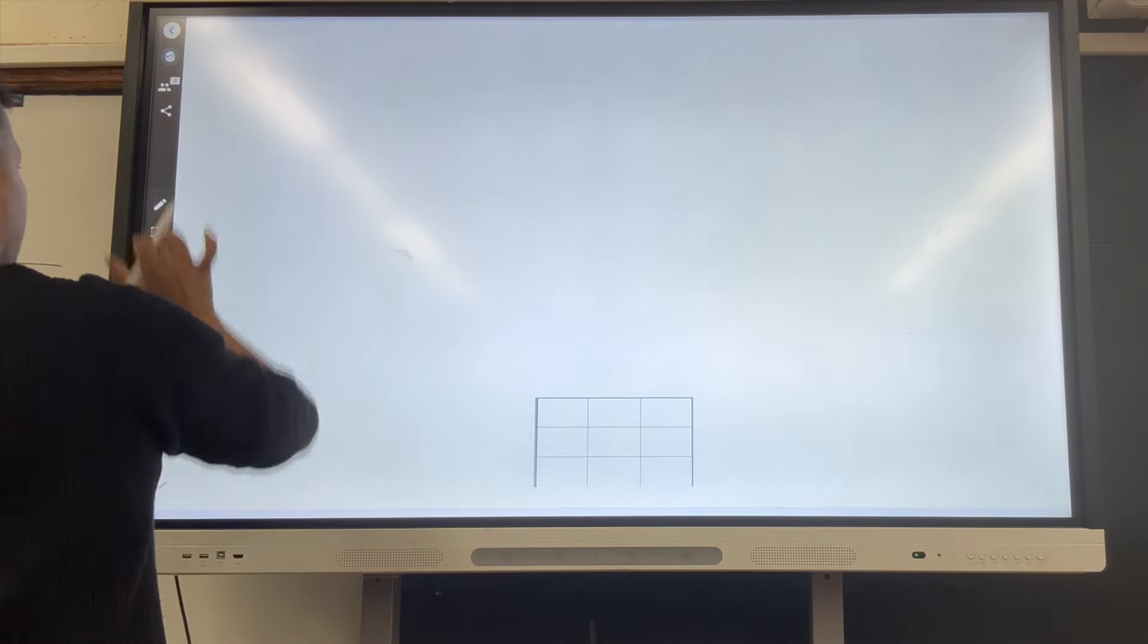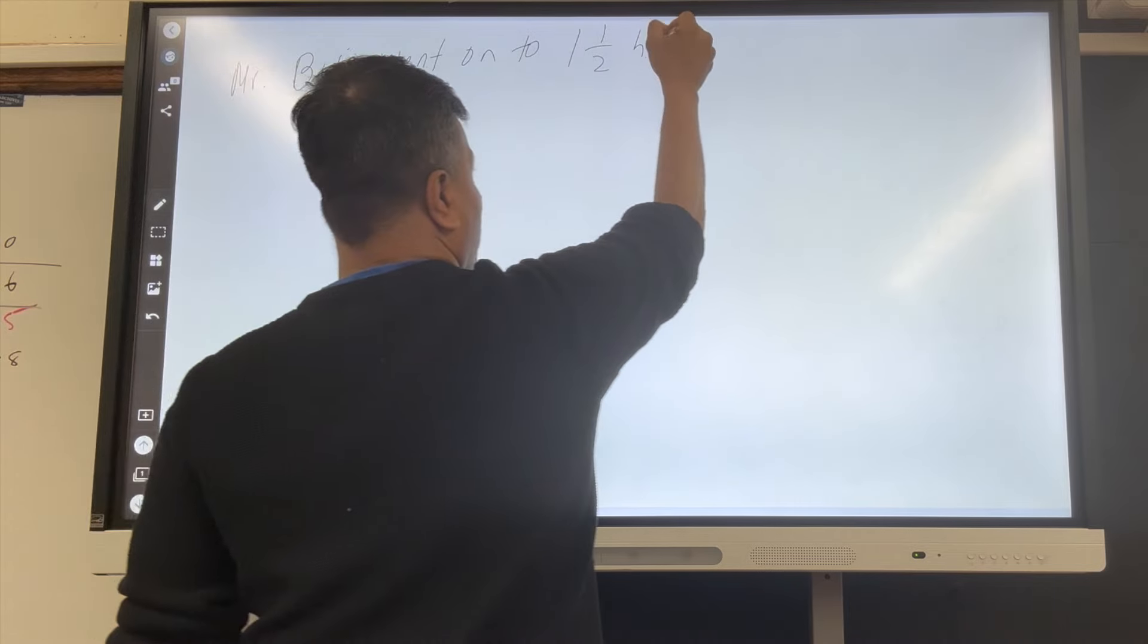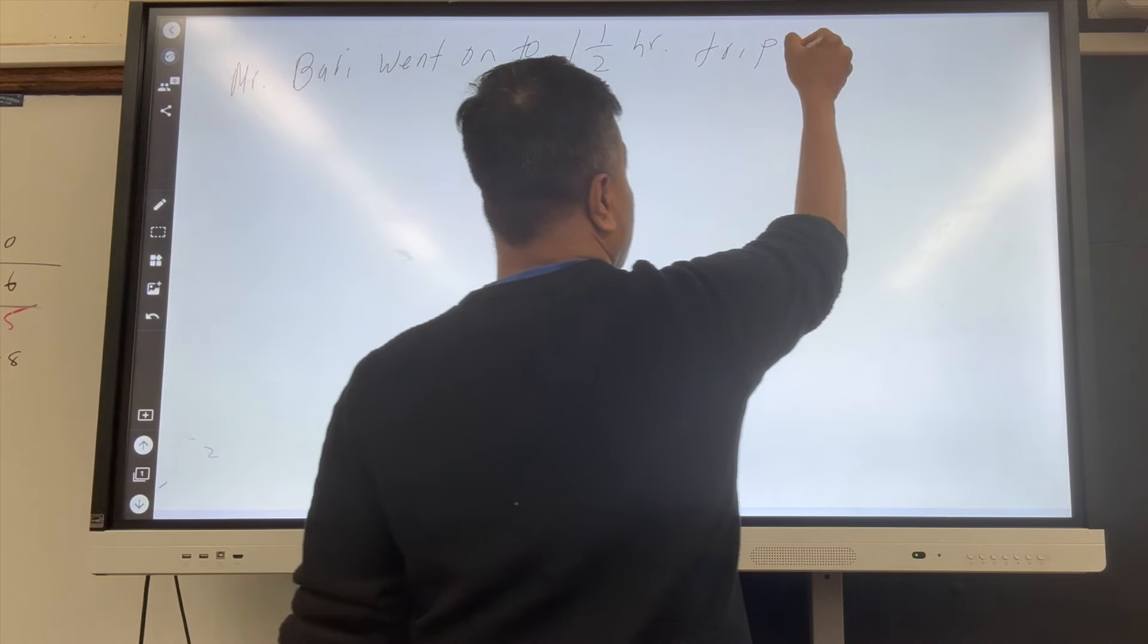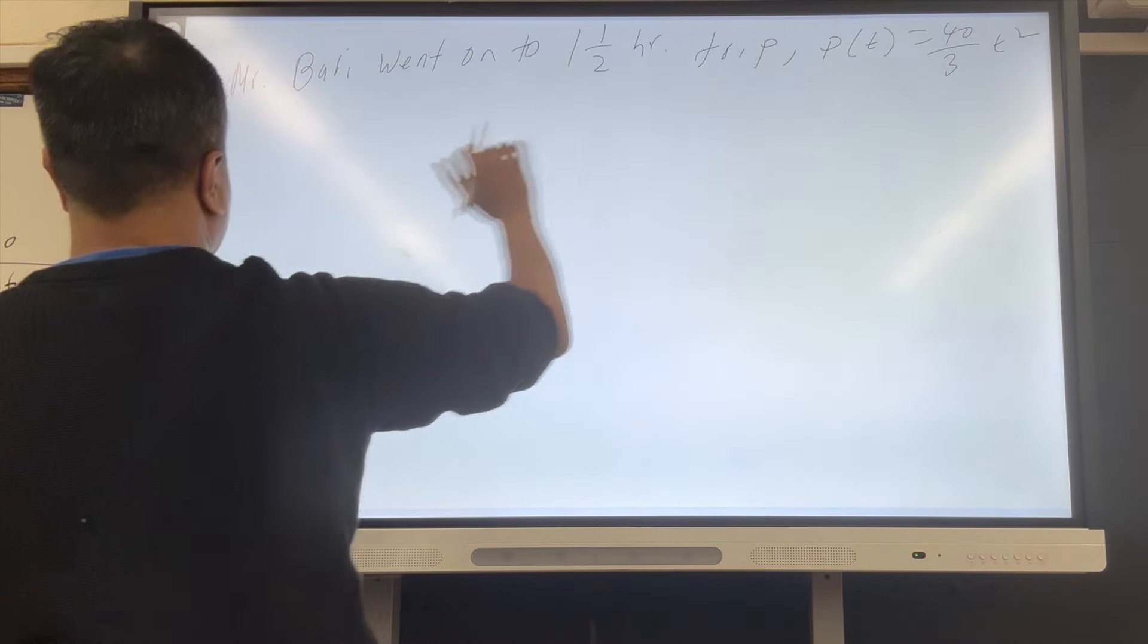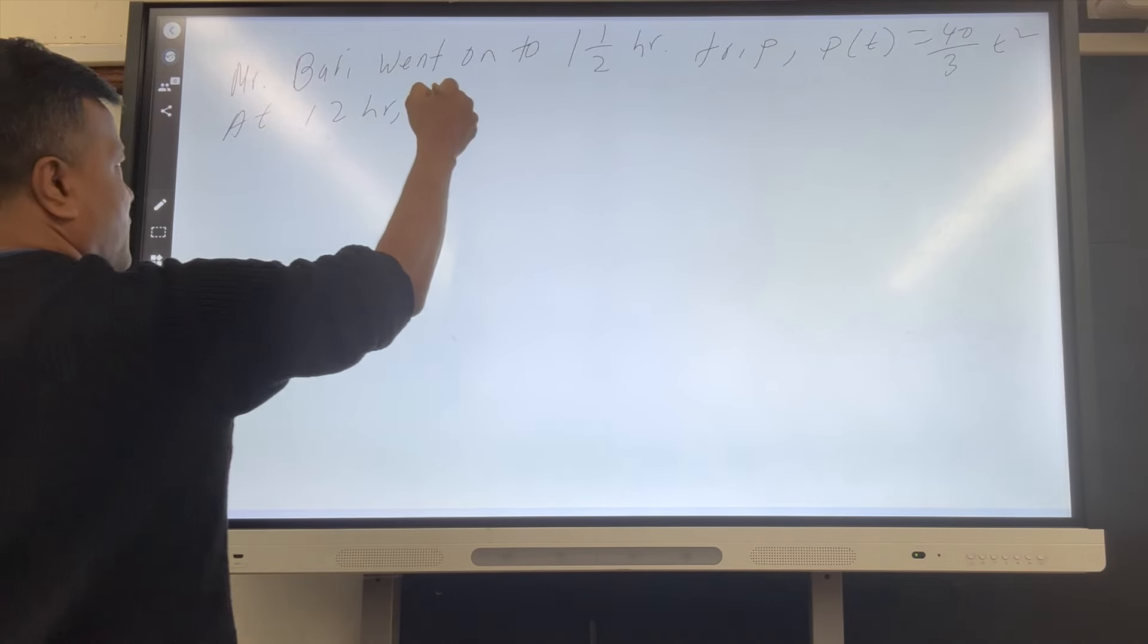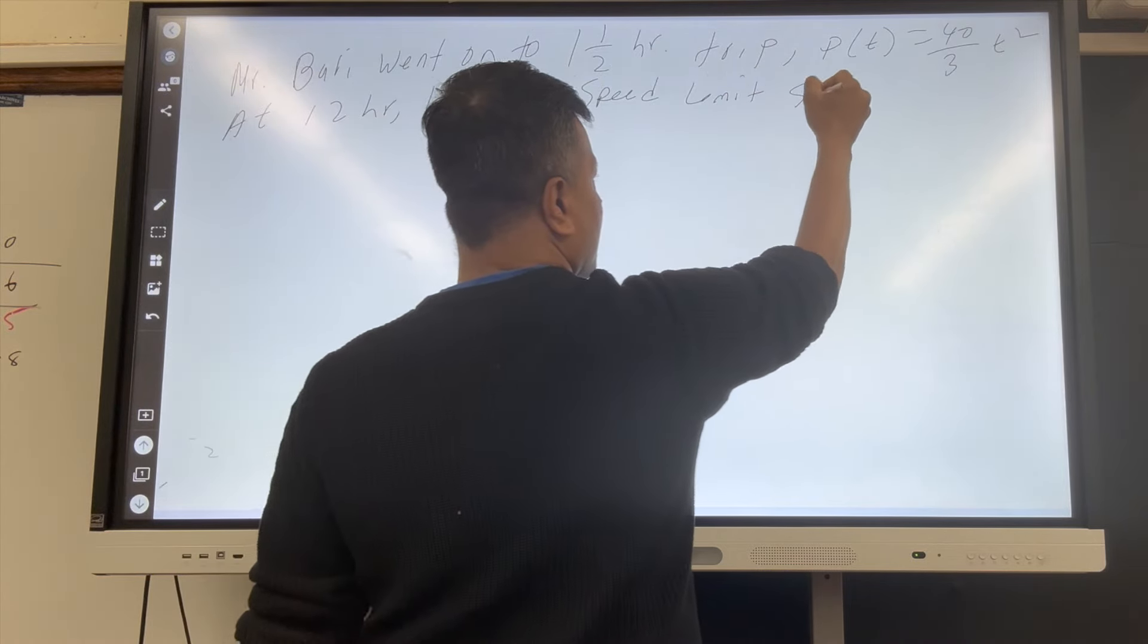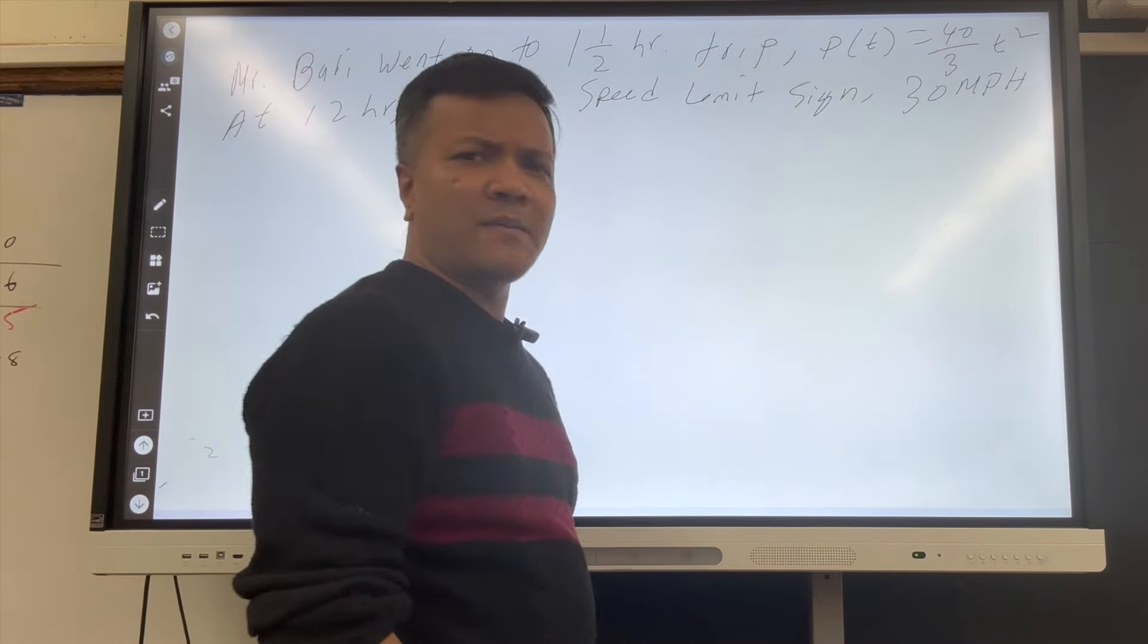Mr. Buddy went on a 1.5 hour long car trip, and his position function is 40 over 3 T squared from rest. And at 1.2 hour, he saw speed limit sign, 30 mile per hour. Did he break the law?